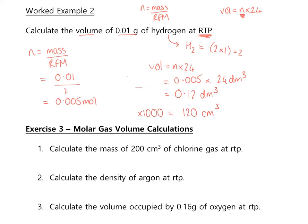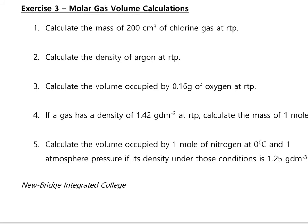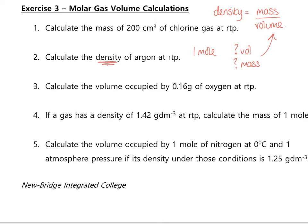Now you should attempt Exercise 3 — simple molar gas volume calculations. Bear in mind that some questions involve density, using the equation density = mass ÷ volume. For a density question, take a convenient number of moles of the gas — it could be 1 mole, 2 moles, or any amount — work out the volume and the mass for that number of moles, then substitute into the density equation.